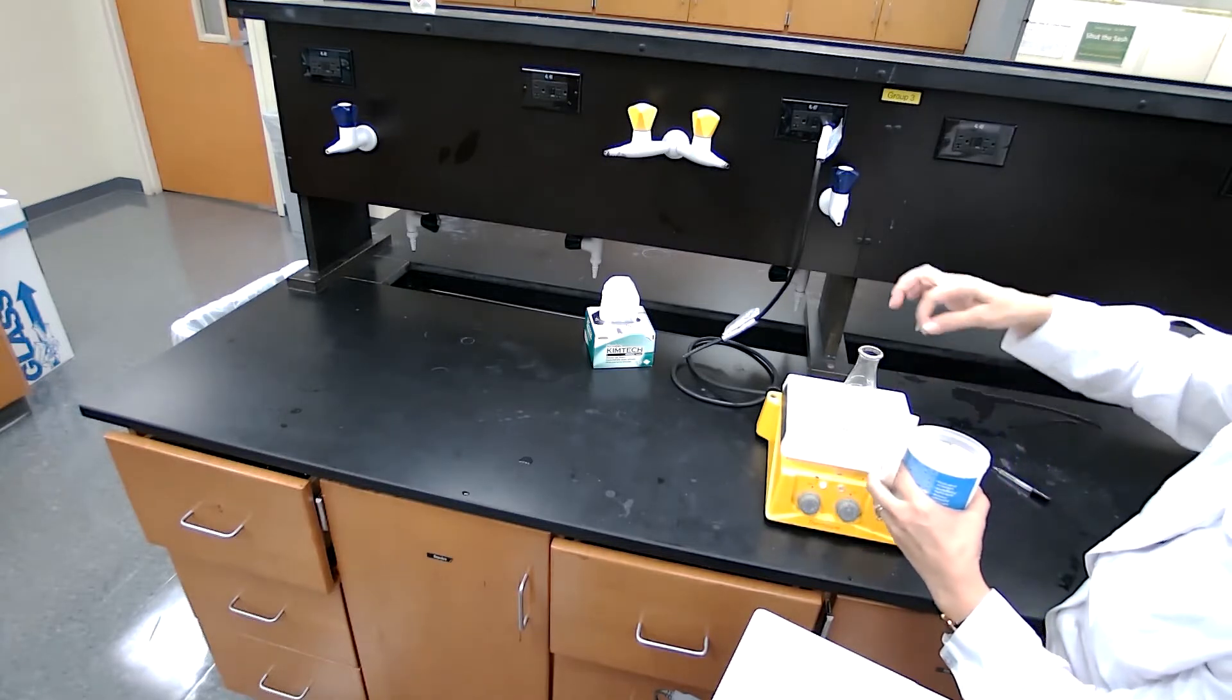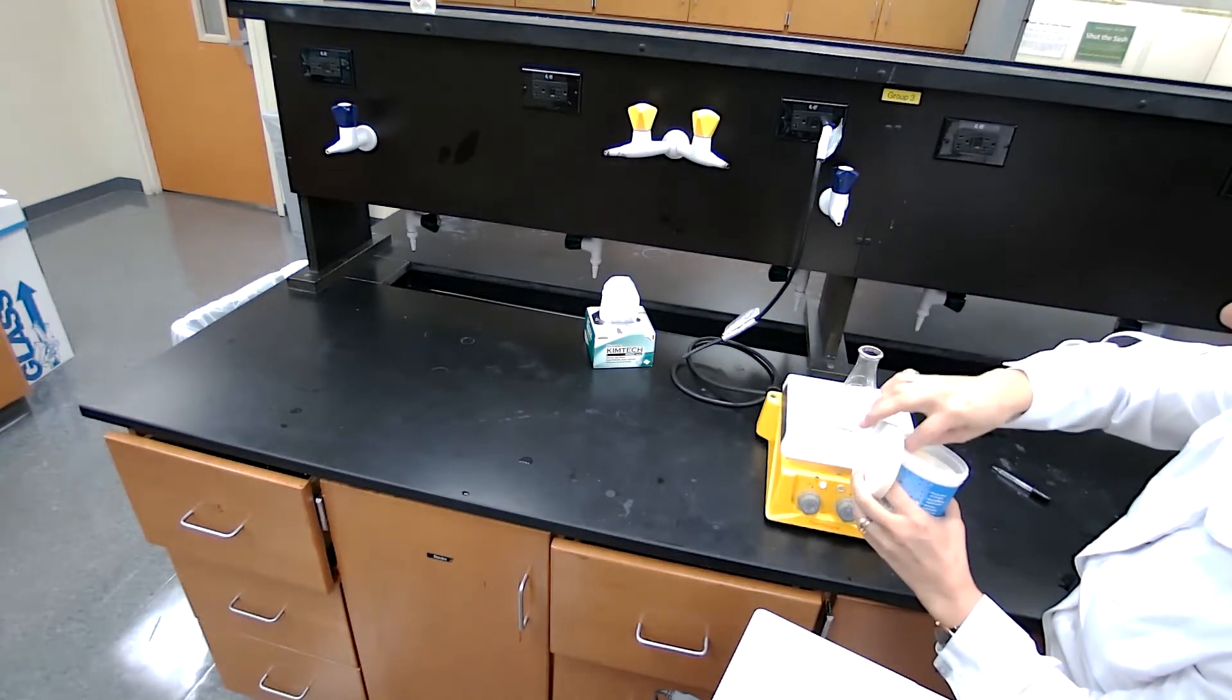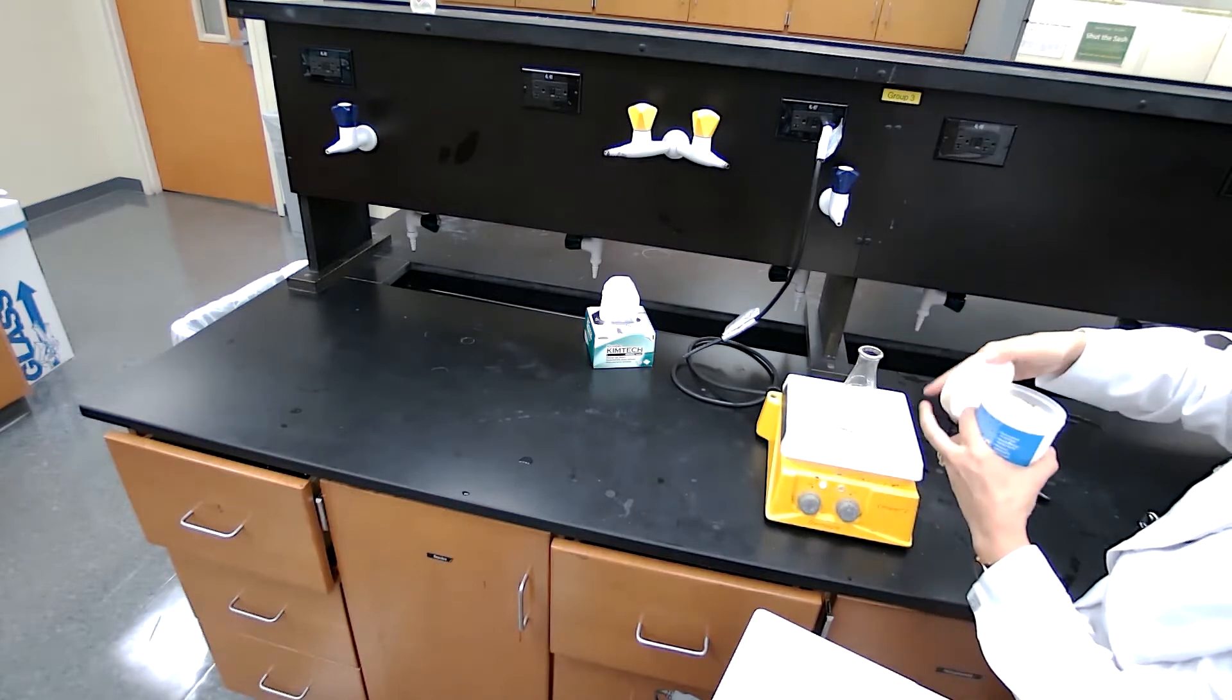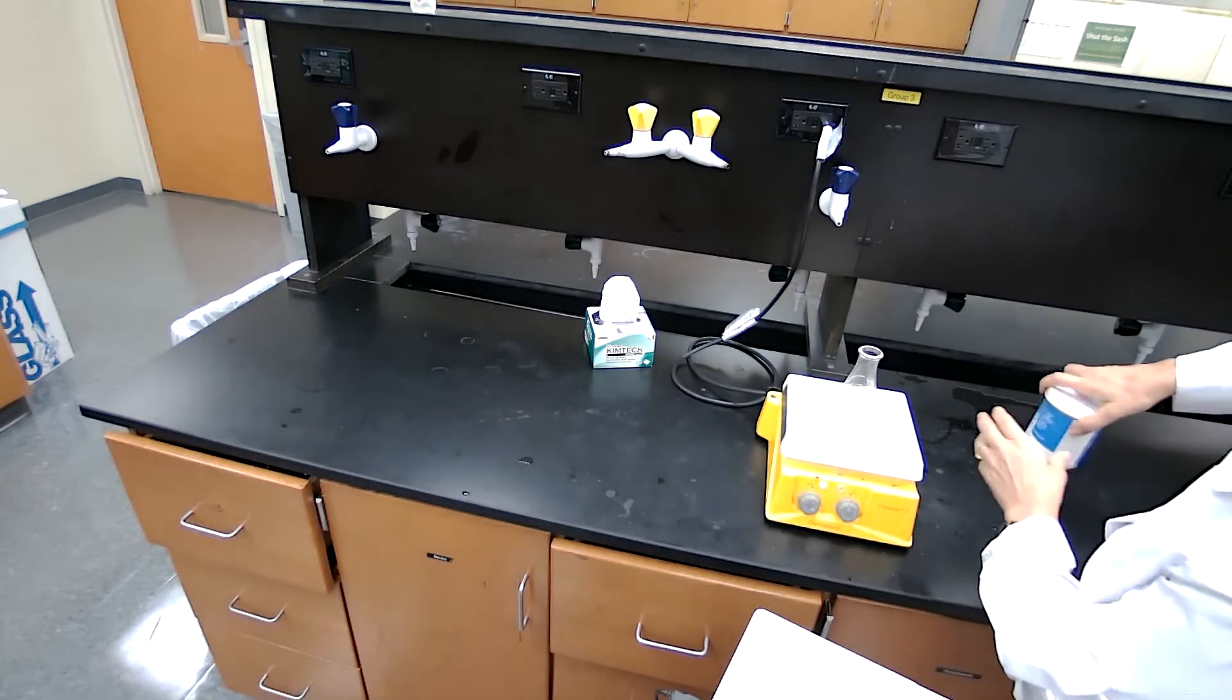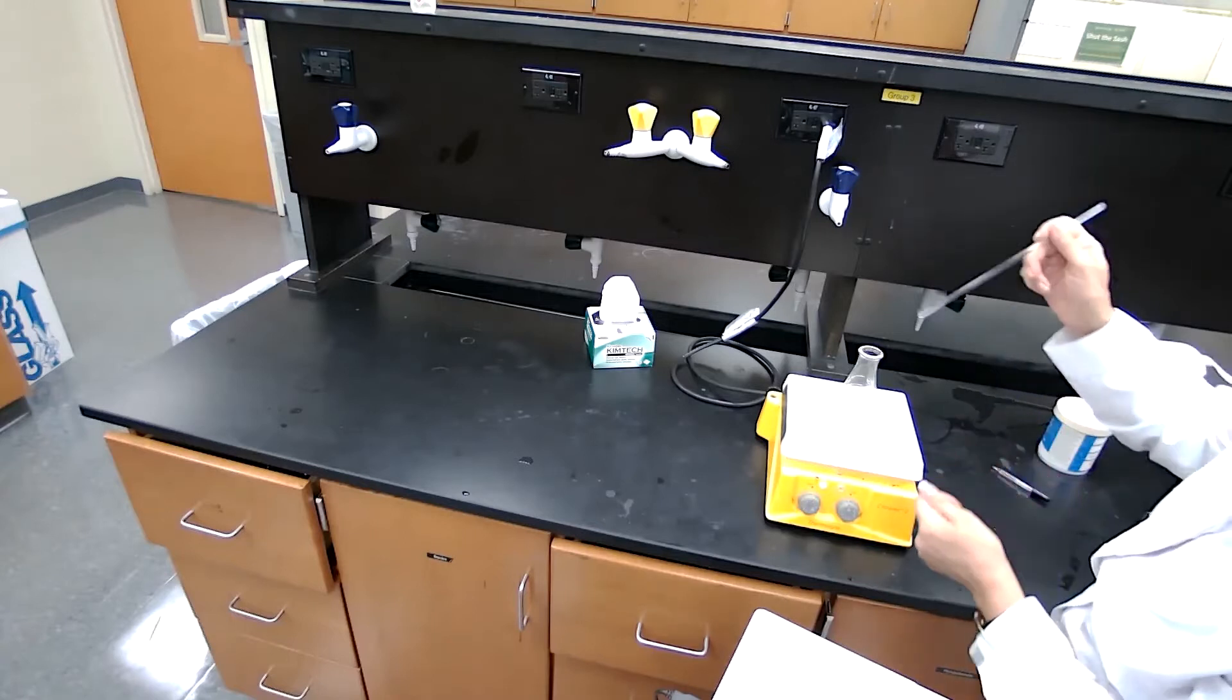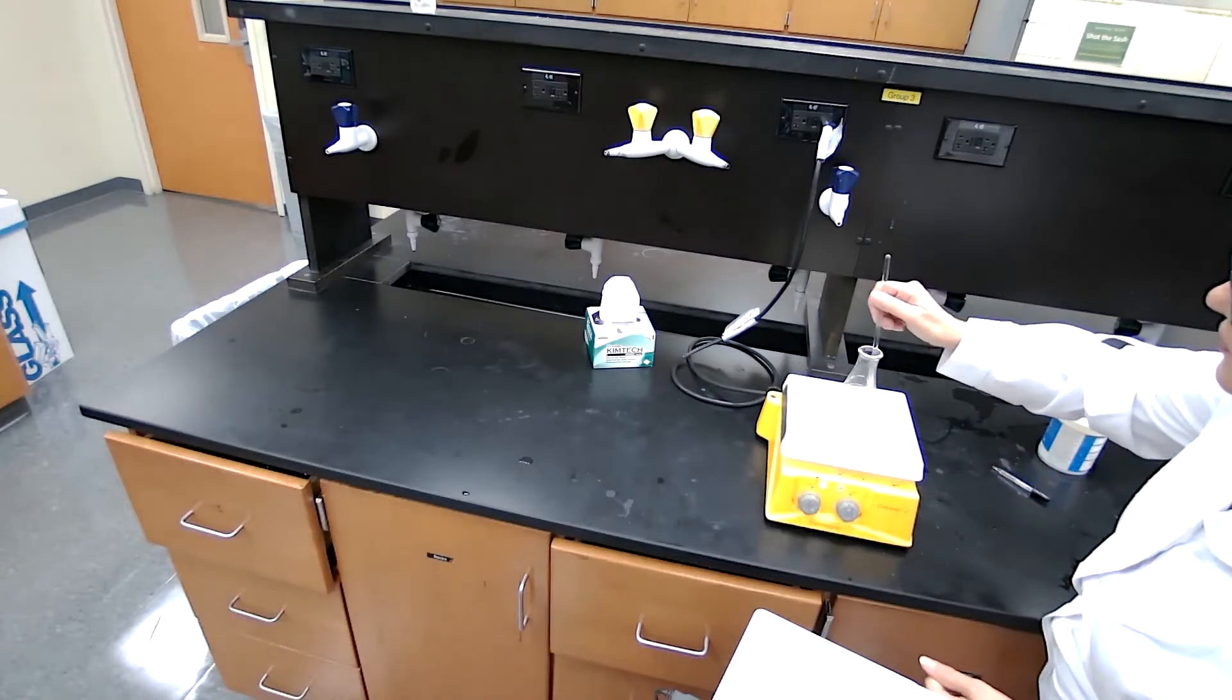Any time you boil a liquid, you want to add boiling chips to avoid bumping. You want to avoid any splashing of the liquid out of the container. The boiling chips are not going to react with your chemicals, and you can manually remove them later.